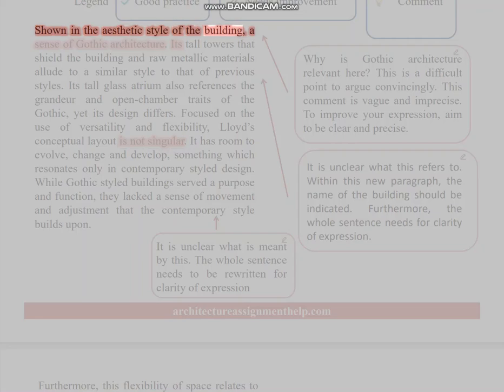Shown in the aesthetic style of the building, a sense of Gothic architecture—its tall towers that shield the building and raw metallic materials—allude to a similar style to that of previous styles. Its tall glass atrium also references the grandeur and open chamber traits of the Gothic, yet its design differs, focused on the use of versatility and flexibility. Lloyd's conceptual layout is not singular; it has room to—why is Gothic architecture relevant here? This is a difficult point to argue convincingly. This comment is vague and imprecise. To improve your expression, aim to be clear and precise.